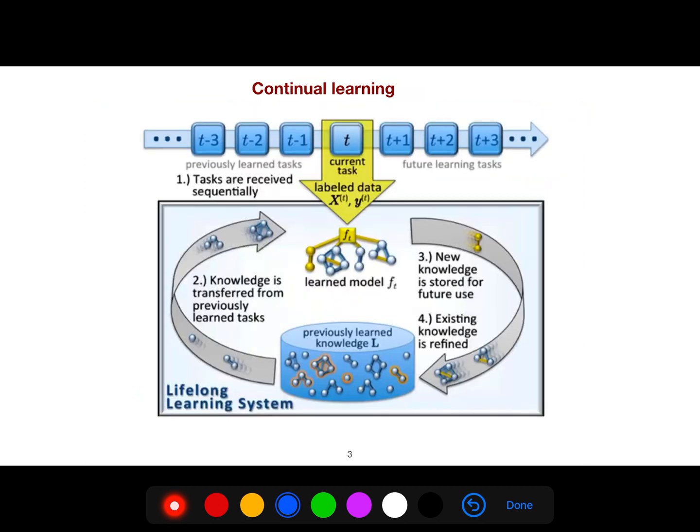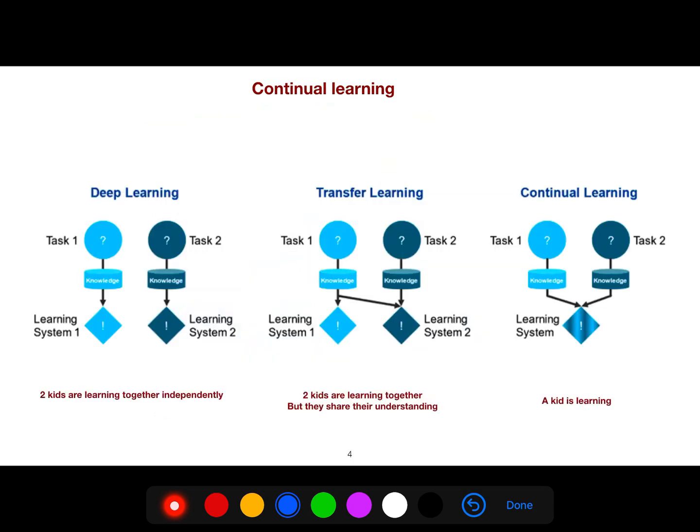And continual learning, as I said, at each instant of time we have a different task. So this is the classical thing, traditional thing, which is deep learning. And now we can make deep learning more advanced by using transfer learning or continual learning.